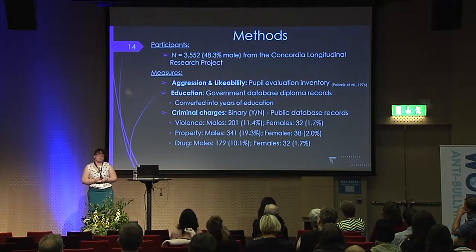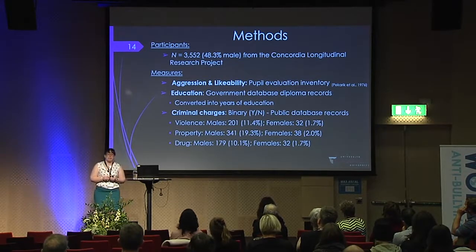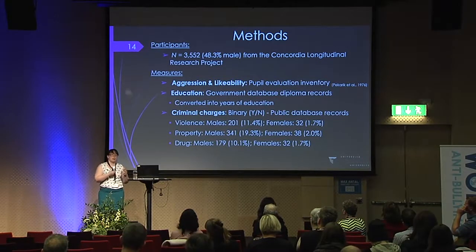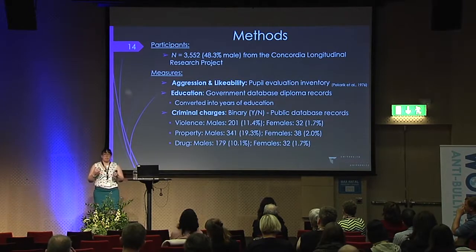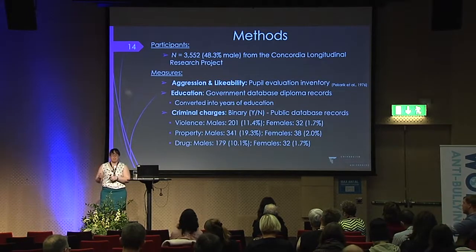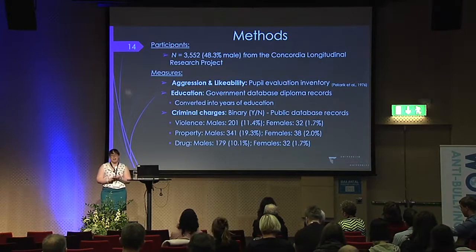In terms of my methods, I had a sample of 3,552 participants from the Concordia Longitudinal Research Project, a little under half being male. For measures, aggression and likability were assessed using the Pupil Evaluation Inventory — a peer nomination survey where each child nominates four boys and four girls based on statements about aggressive behaviour or likability. For example, a statement under aggressive behaviour would be 'he or she is cruel to others.' Scores were summed and standardised for age, sex, and classroom.